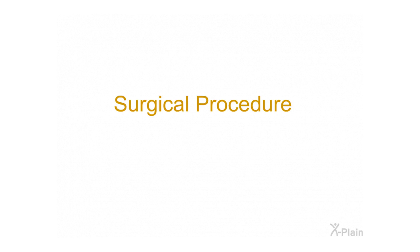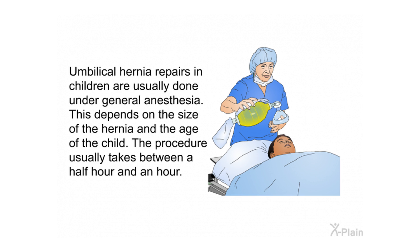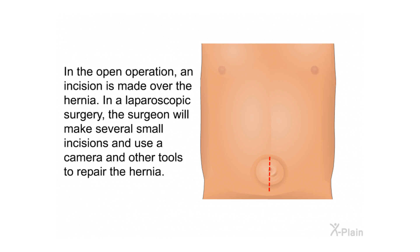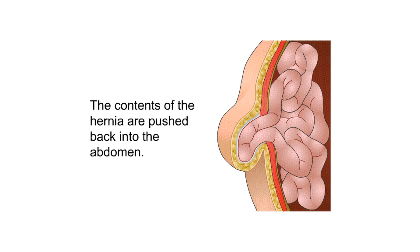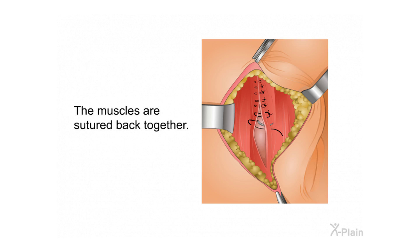Surgical procedure. Umbilical hernia repairs in children are usually done under general anesthesia, depending on the size of the hernia and the age of the child. The procedure usually takes between a half hour and an hour. In the open operation, an incision is made over the hernia. In a laparoscopic surgery, the surgeon makes several small incisions and uses a camera and other tools to repair the hernia. The contents of the hernia are pushed back into the abdomen, and the muscles are sutured back together.